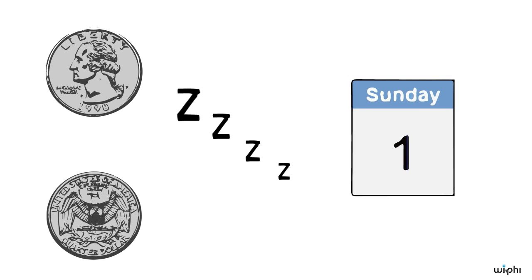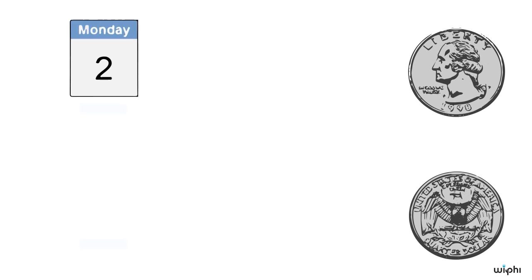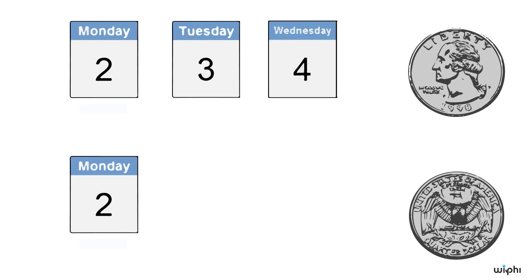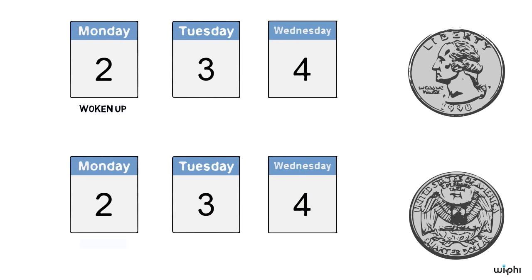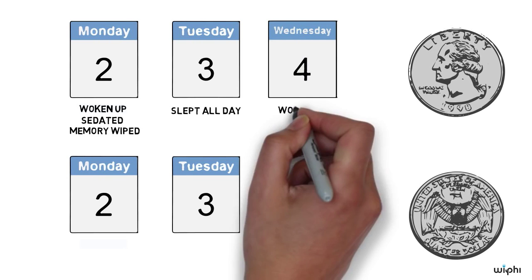Depending on the result of that coin flip, which they won't tell sleeping beauty, one of two scenarios will occur. If the coin comes up heads, sleeping beauty will be woken up on Monday and then given a sedative which puts her to sleep and erases her memory of ever having been woken up. On Tuesday they will let her sleep all day before waking her up on Wednesday when the experiment ends.